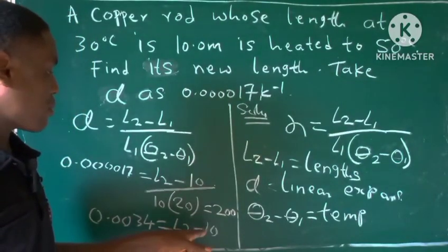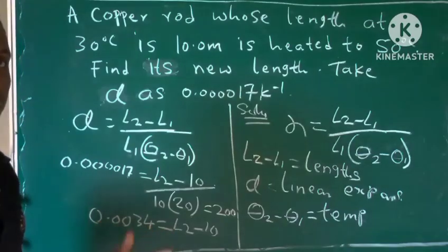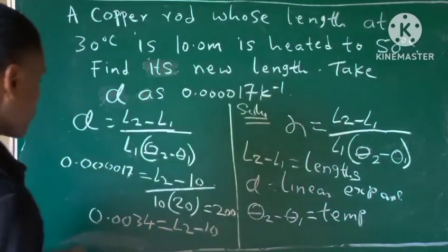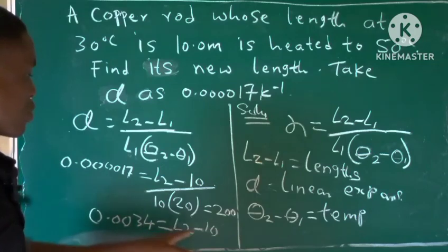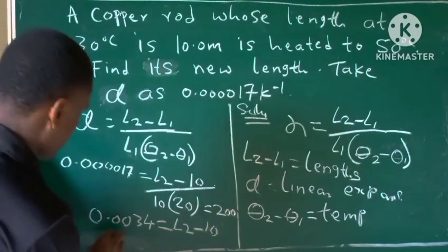So here we collect like terms by moving minus 10 to our left side, it becomes positive 10. So 0.0034 plus 10 will give us 10.0034 equals L2, which is in meters.